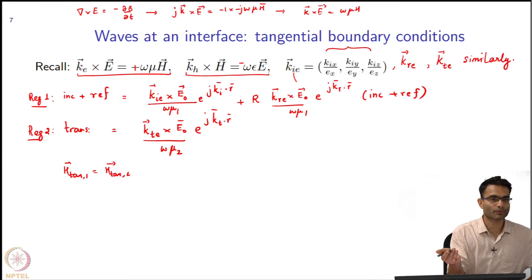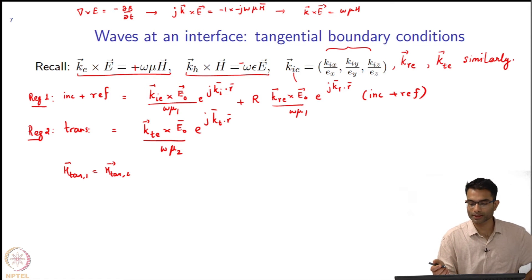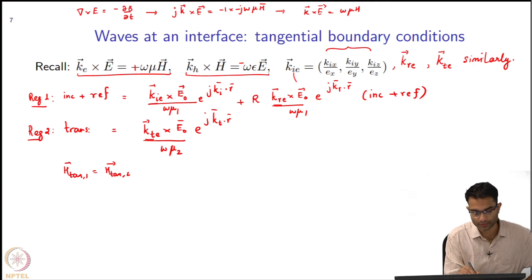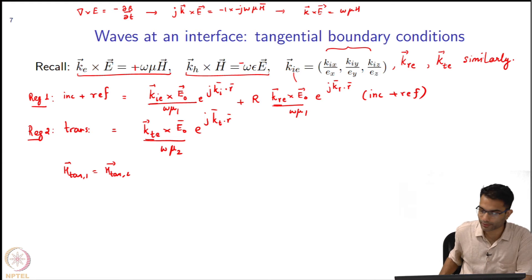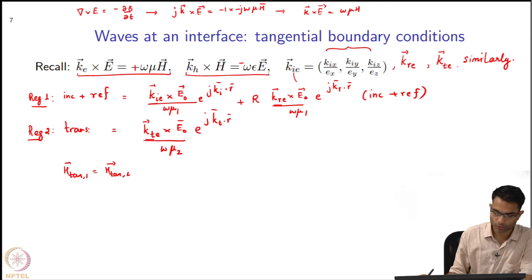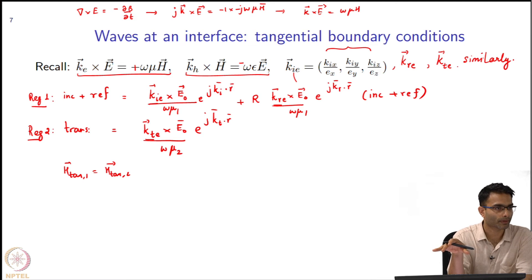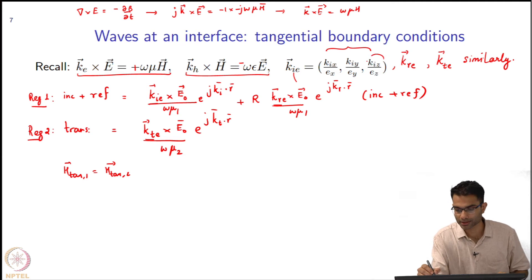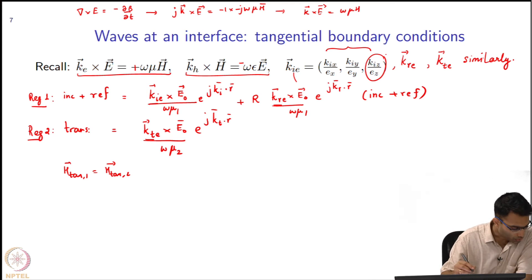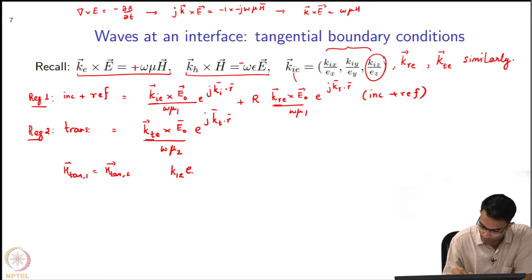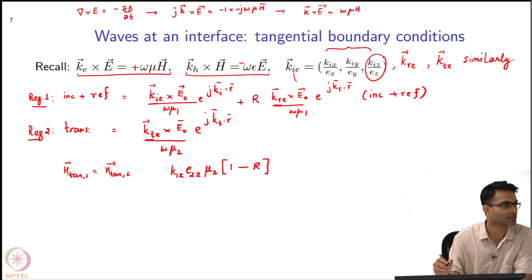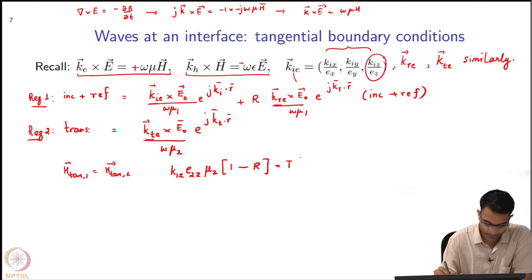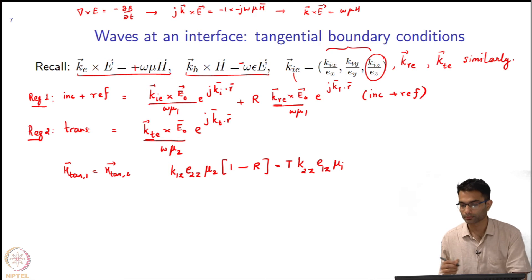Remember that E_naught vector is the same everywhere, so when I take this cross product I will get a very simple expression. The only thing that will differ is in one place I have k_i, then k_r, and k_t. It is just a little bit of algebra. What I get is: k_1z / (epsilon_2z mu_2) times (1 minus r) equals t times k_2z / (epsilon_1z mu_1).